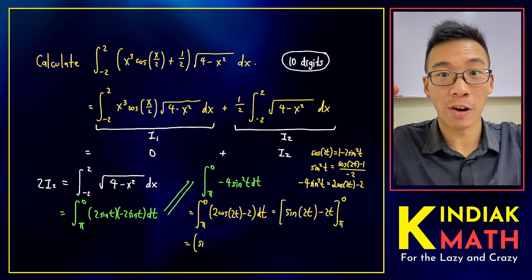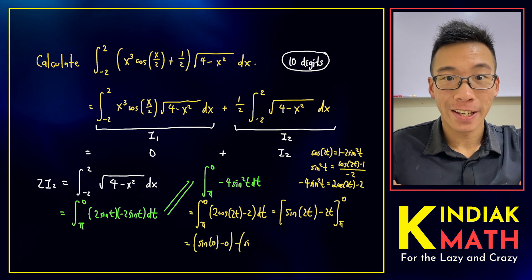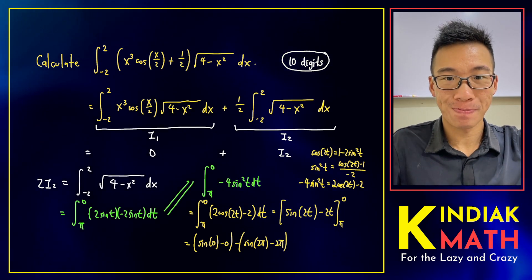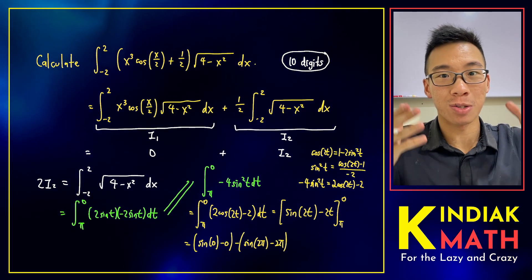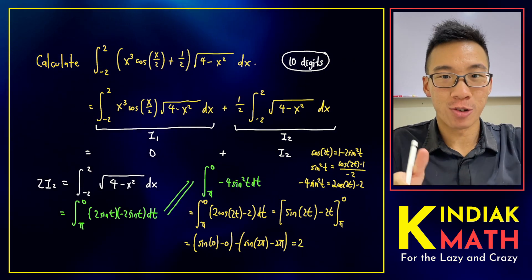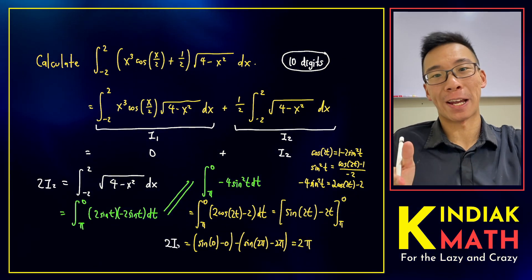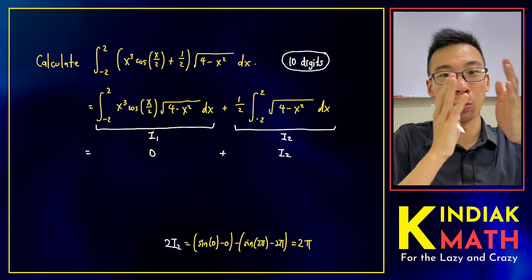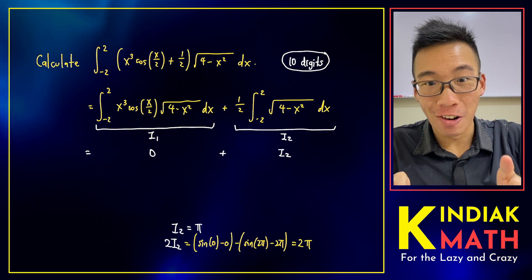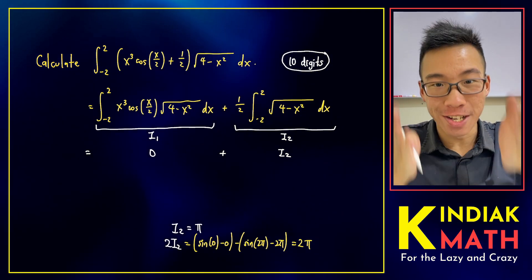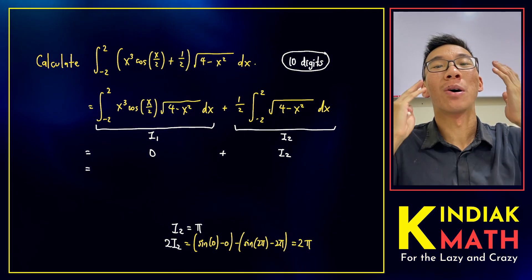We can plug in t equals to 0, followed by t equals to pi, and then do a bit of subtraction. Since sine of 0 and sine of 2pi both equal to 0, we can do a bit of algebra and obtain 2pi. Since 2i2 equals to 2pi, we have that i2 must equal to pi. Therefore, the integral of our interest must evaluate to pi.